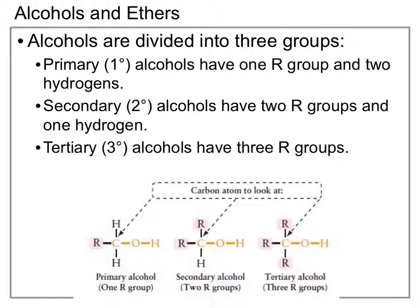We break alcohols up into three main groups: primary, secondary, and tertiary. In each case, what we want to look at is the carbon atom that is bonded to the oxygen. In the case of a primary alcohol, that carbon will have one other carbon group coming off of it — some sort of carbon chain — and two hydrogens. In the case of a secondary alcohol, that carbon has two different R-groups with one hydrogen. And finally, a tertiary alcohol does not have any hydrogens attached to that carbon, but rather we have three different R-groups.